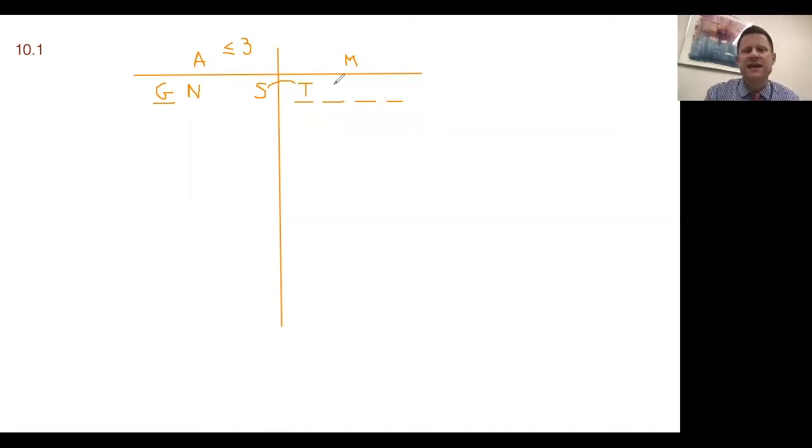But notice what happened in this case. Not only do we know that F is here, but that main dish has to have everybody else because the appetizer has already reached its maximum. So our floaters, the free agents that we don't know anything about, which are L and P, they have to fill the main dish in this case. We have to have four flavorings at least in the main dish. If we put GN in the A column, we know almost everything that happens.